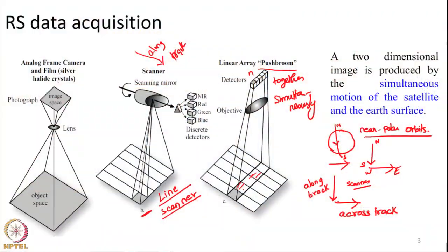Hello everyone, welcome to the next lecture in the course Remote Sensing Principles and Applications. We are going to continue with the topic of remote sensing systems and image acquisition where we left from the previous lecture. In the previous lecture we saw different mechanisms or different ways in which data can be collected from satellites in near polar orbit.